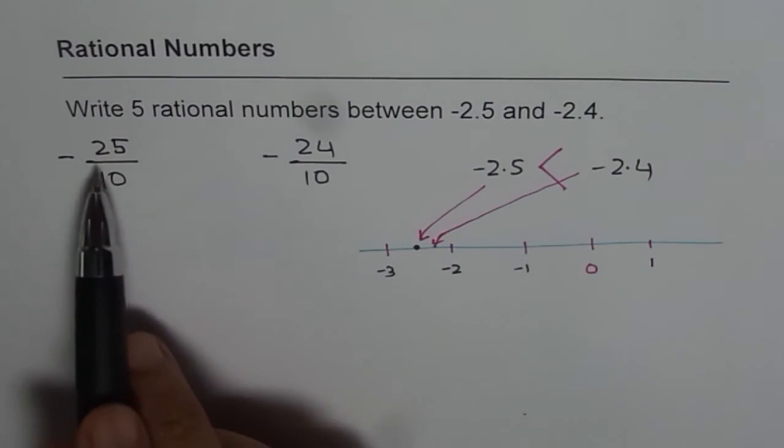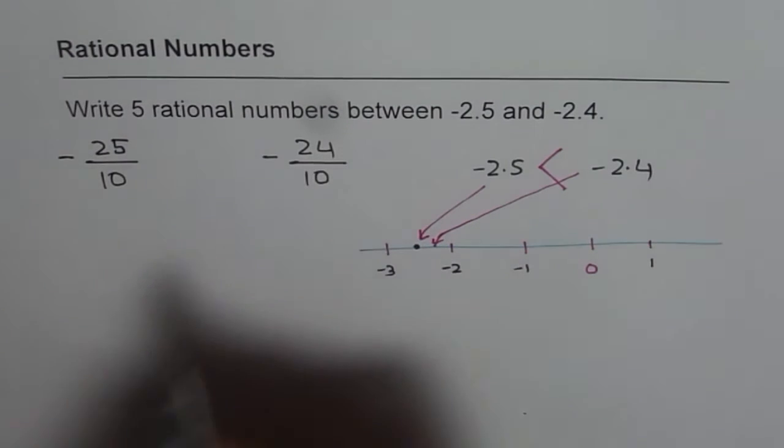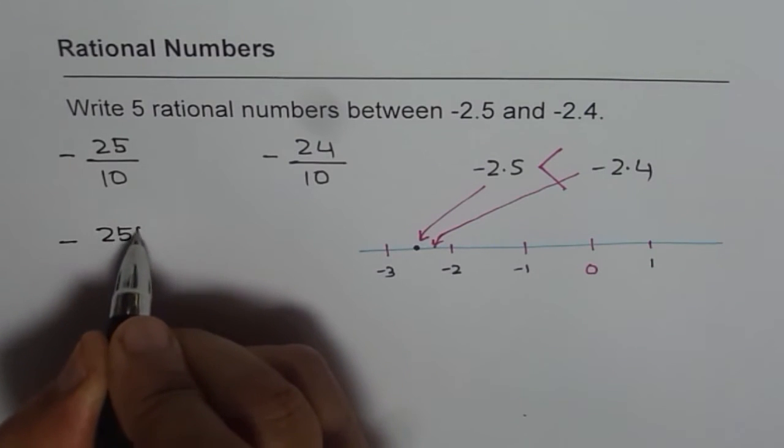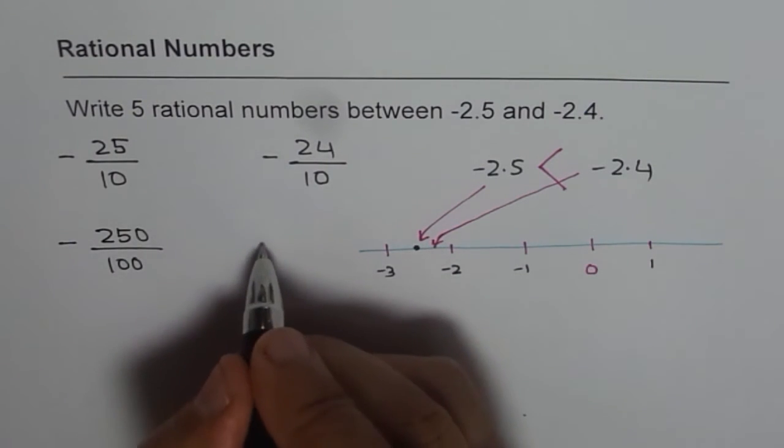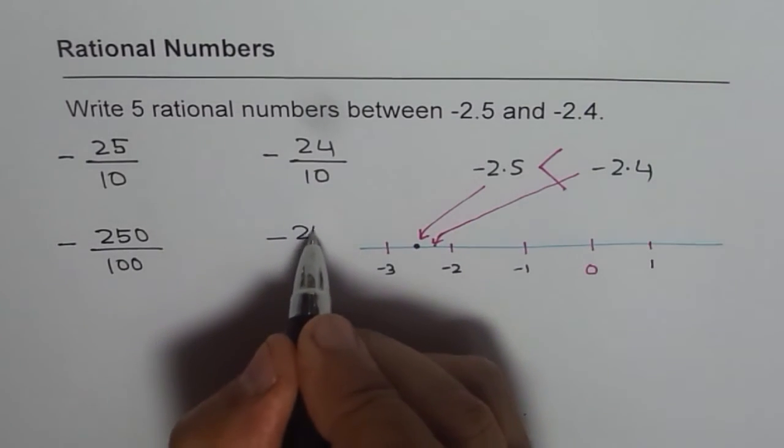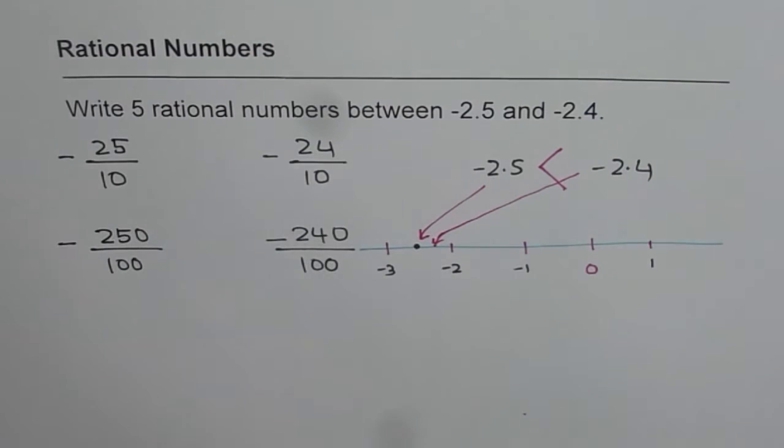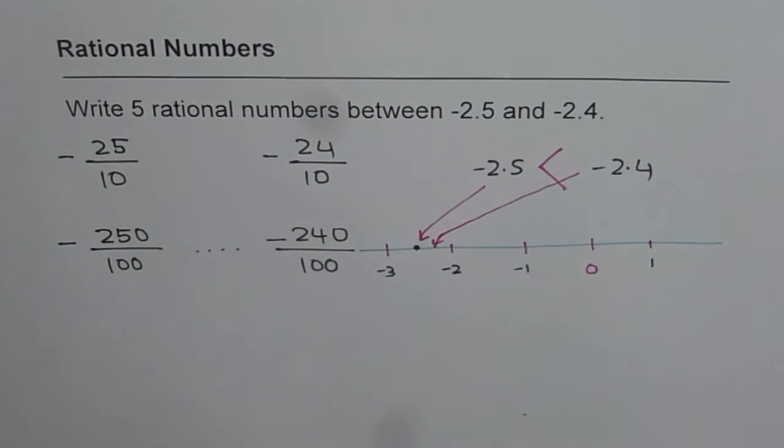Now, how will you write numbers in between them? That is a good question. We can think of these as minus 250 over 100 and this is minus 240 over 100. Now, I think we can write numbers in between.